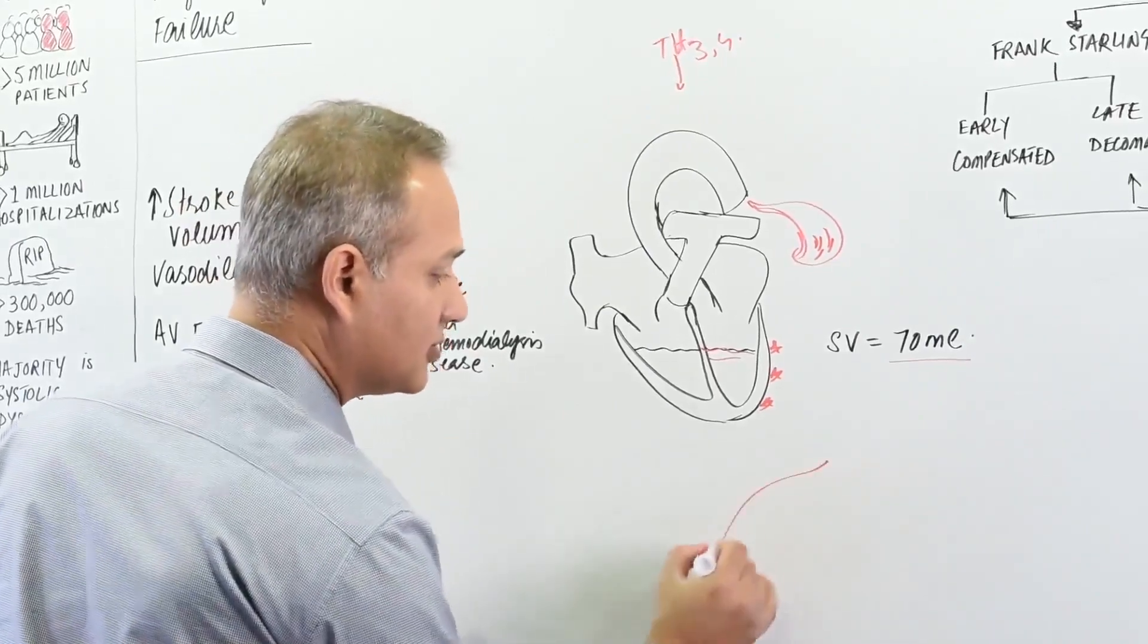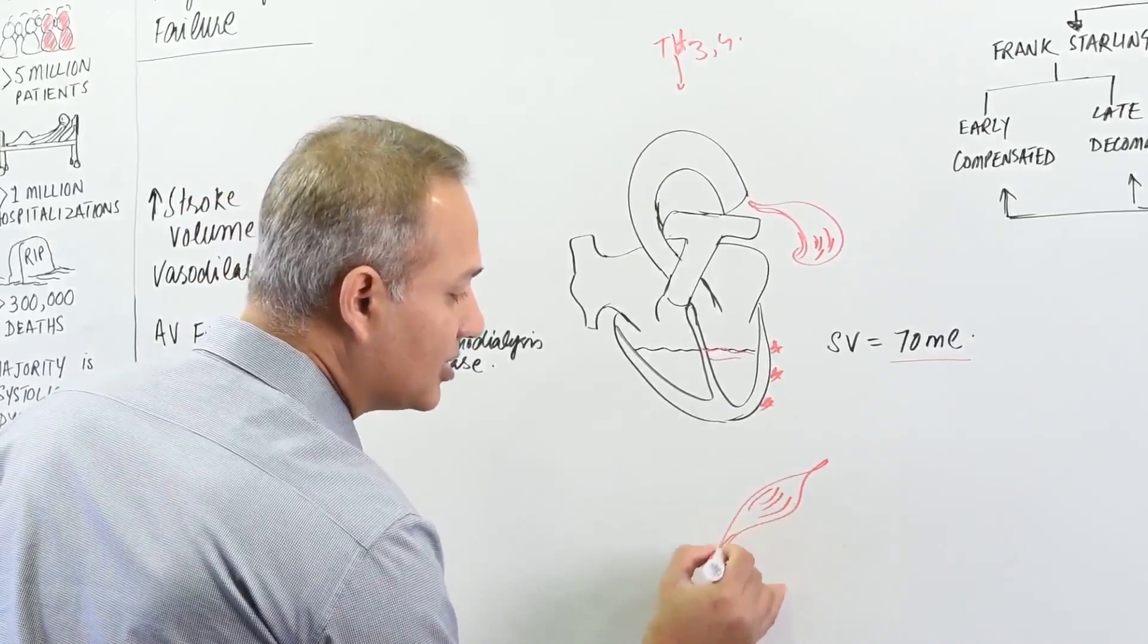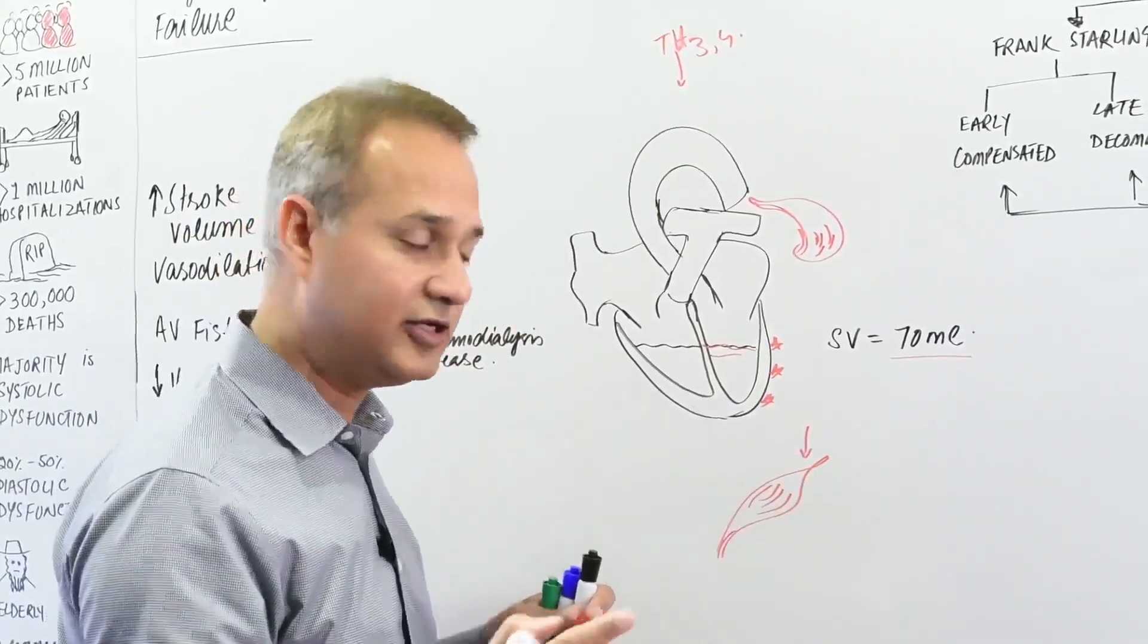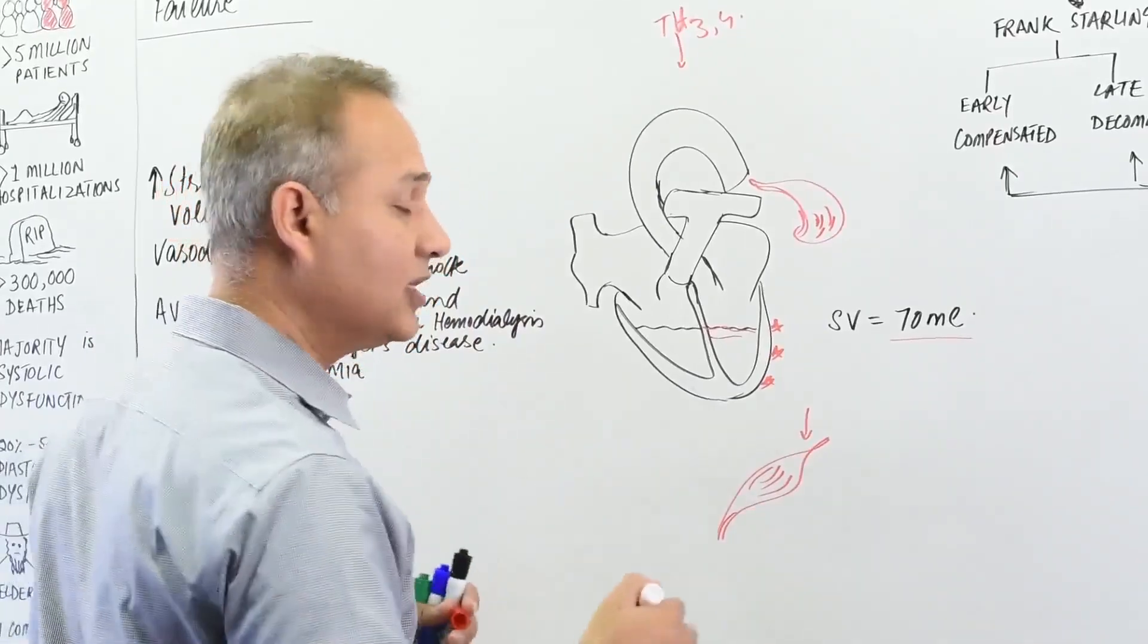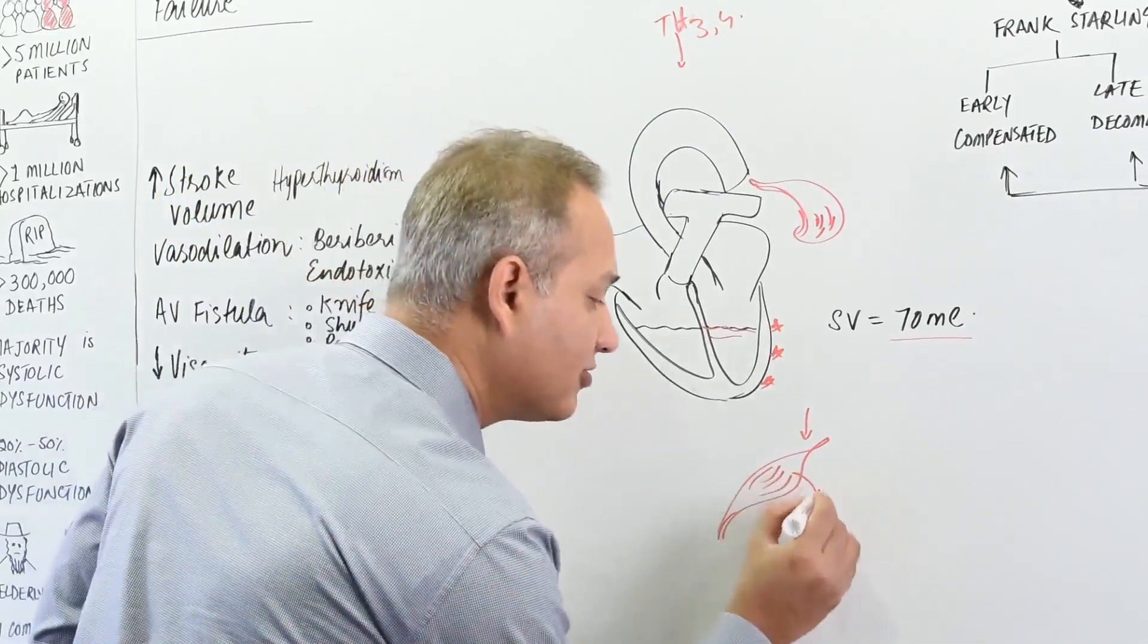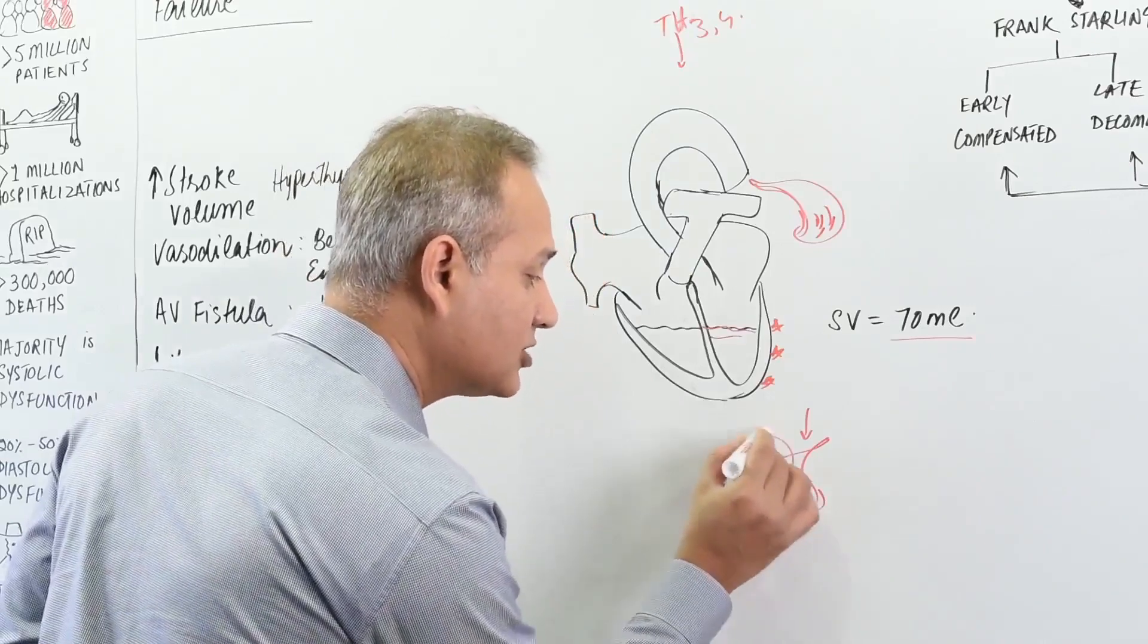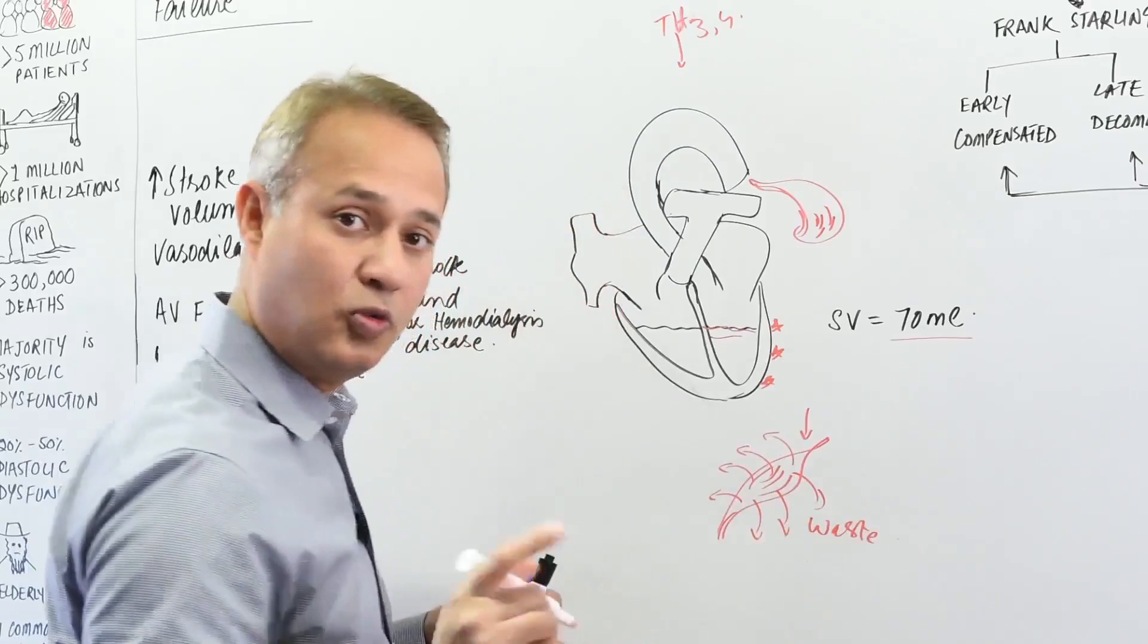It would also act on the tissues. When the tissues are under increased thyroid hormone influence, what would happen is these would start having increased metabolic rate as well. When the tissue's metabolic rate is increased, what would happen? Lots of waste products will be produced, metabolites will be produced.